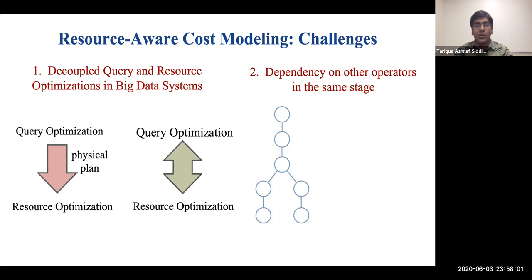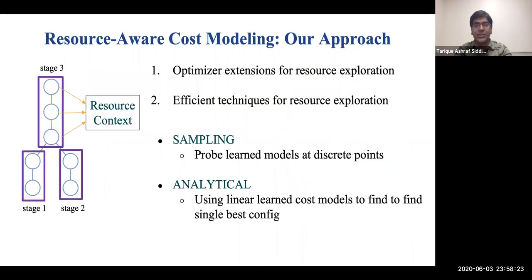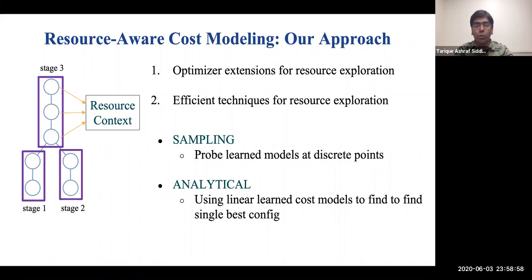Second, resources that lead to optimal cost can vary from operator to operator. For example, each of the seven operators in this plan can have different optimal resources. However, for execution in big data systems, operators are often grouped together into stages, and those belonging to the same stage must have the same resource configuration. So the challenge is how to find the optimal resource for the entire stage. To address these issues, we extend the Cascades framework with a resource context to jointly explore resources for all operators within a stage. We also propose two techniques for efficient exploration of resources during query optimization: a sampling-based approach that probes learned models for different resource configurations, and an analytical solution that uses simple learned cost models to find a single optimal resource configuration, helping avoid too many probes during optimization.